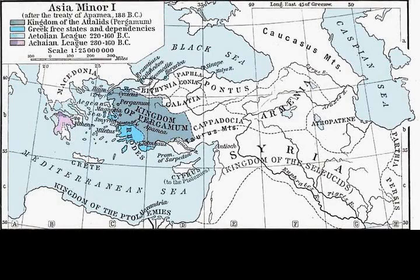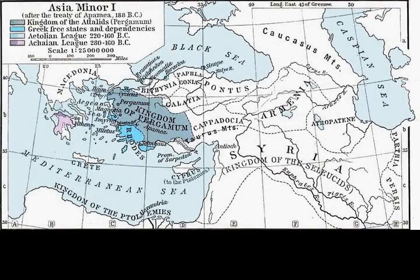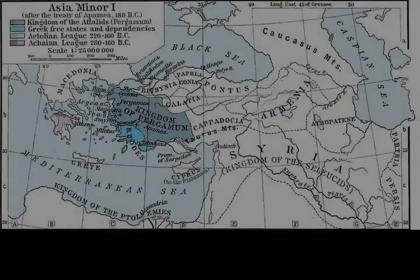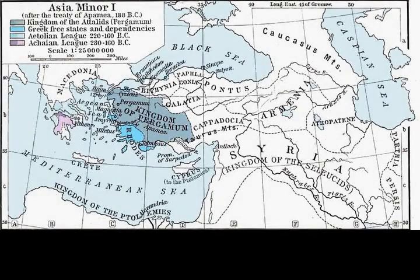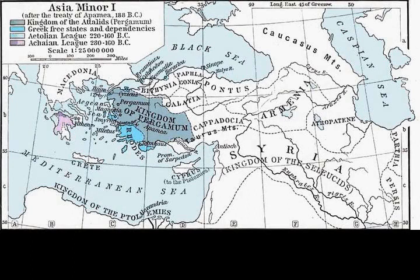Following his return from his Bactrian and Indian campaigns, the Seleucid king Antiochus III the Great forged an alliance with Philip V of Macedon, seeking to jointly conquer the territories of the Ptolemaic Kingdom. In 198 BC, Antiochus emerged victorious in the Fifth Syrian War, taking over Coele-Syria and securing his southeastern border. He then focused his attention on Asia Minor, launching a successful campaign against coastal Ptolemaic possessions.